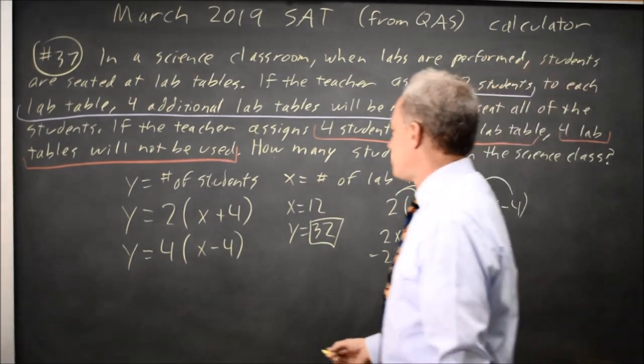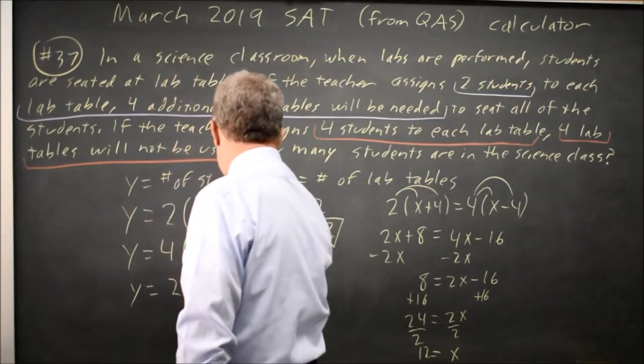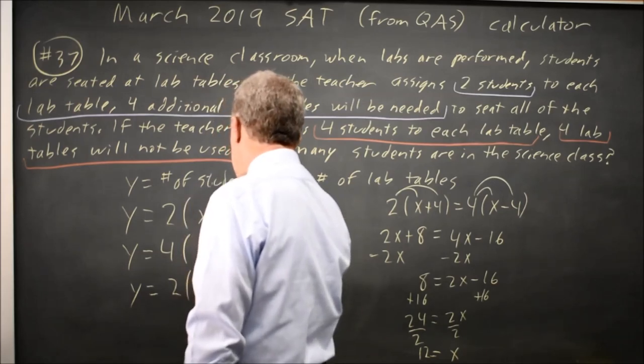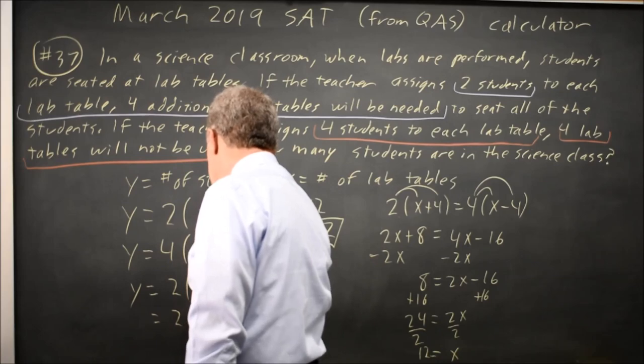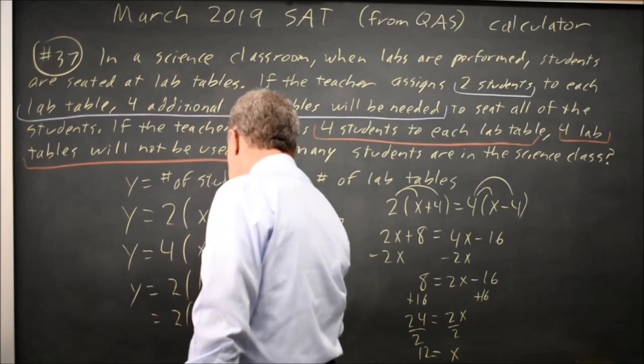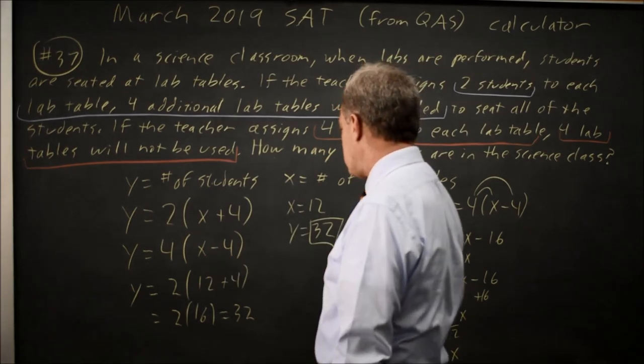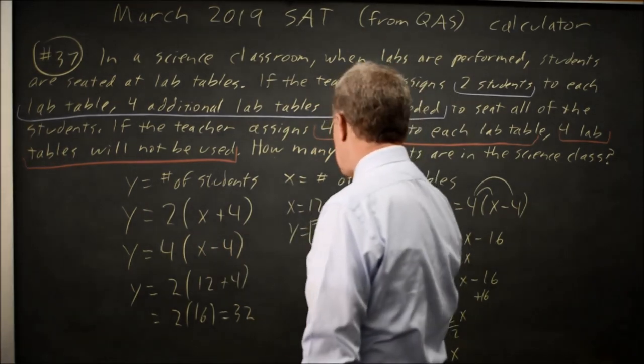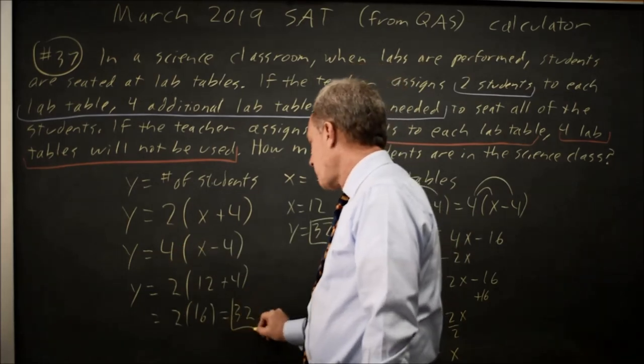Going back to one of my equations, y equals 2(x), which is 12, plus 4. That is 32 students. Alternatively, I could have substituted into the second equation. 12 minus 4 is 8, and 8 times 4 is 32. That gives me the same answer.